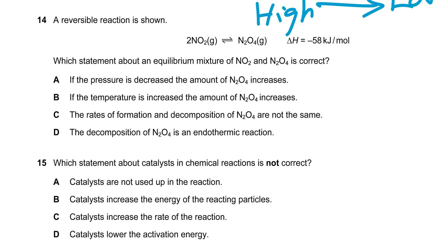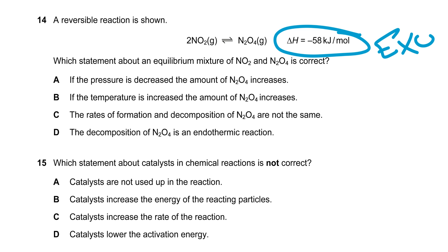In question 14, a reversible reaction is shown: two moles of nitrogen dioxide in an equilibrium reaction produce one mole of dinitrogen tetroxide (N₂O₄), and the reaction is exothermic. Which statement about an equilibrium mixture of NO₂ and N₂O₄ is correct? If the pressure is decreased, the amount of N₂O₄ increases — pressure is related to the number of moles: two moles on the left and one mole on the right.